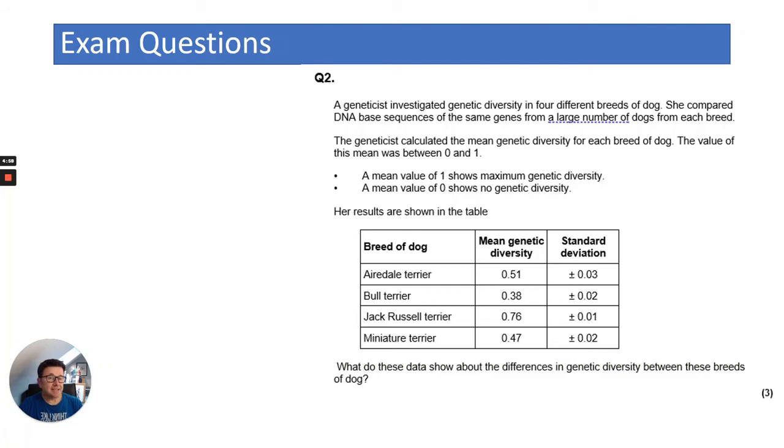Example two, a geneticist investigated genetic diversity in four different breeds of dog. She compared DNA based sequences of the same genes from a large number of dogs from each breed. The geneticist calculated the mean genetic diversity for each breed of dog. The value of this mean was between zero and one. A mean value of one shows maximum genetic diversity. A mean value of zero shows no genetic diversity. Her results are shown in the table. So again, you can see standard deviations, mean genetic diversity. What do these data show about the differences in genetic diversity between these breeds of dog? There's three marks.